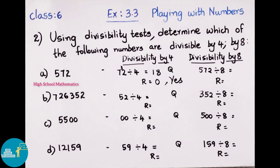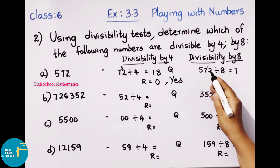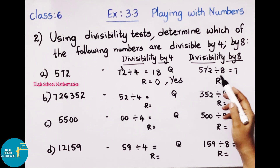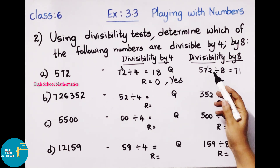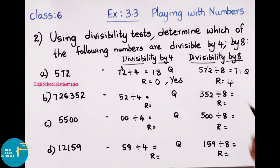Next, let's check divisibility by 8. A number is divisible by 8 if the last three digits are divisible by 8. Since 572 is a 3-digit number, we divide 572 by 8. 8 times 7 is 56; 57 minus 56 gives remainder 1. Bring down 2, making it 12. 8 times 1 is 8; 12 minus 8 gives remainder 4. So quotient is 71, remainder is 4. Since remainder is not 0, 572 is not divisible by 8.